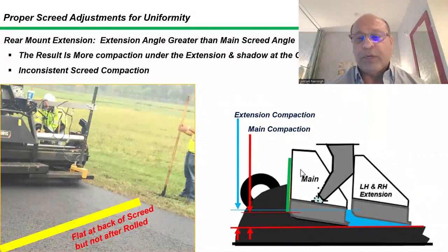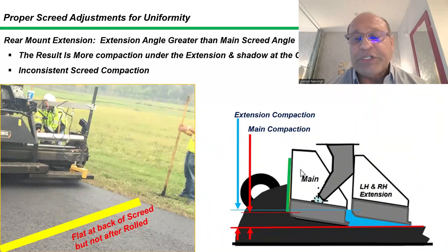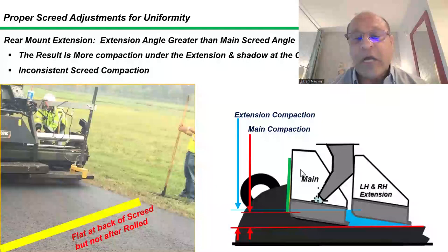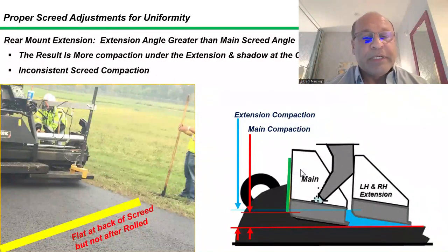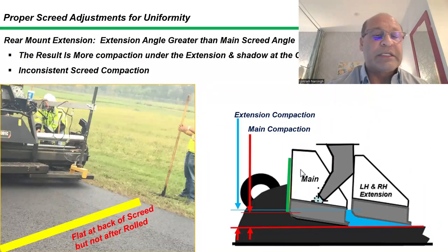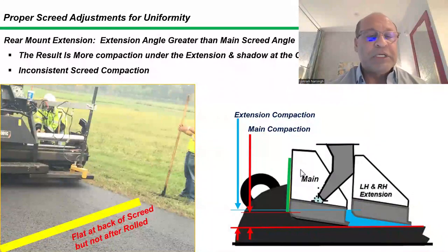Now we're looking at a rear mount screed where the trailing edges are on the same plane, so if I put a straight edge across the mat, it will be flat. But if you look at the left and right-hand extension, the material is being sheared off where the blue line is. The difference between the blue line and the main screed red line is how much more material is getting compacted under the extension screed. You can see from the picture the texture is different. Depending on how far off it is, we may see some looser texture inside the edge of the main screed, which may appear to be segregation, but it is not segregation — it is compaction at a different rate.